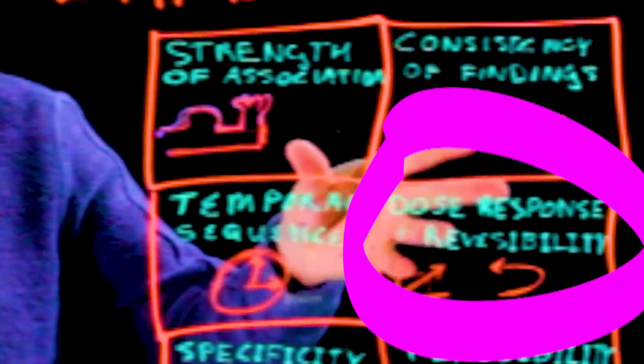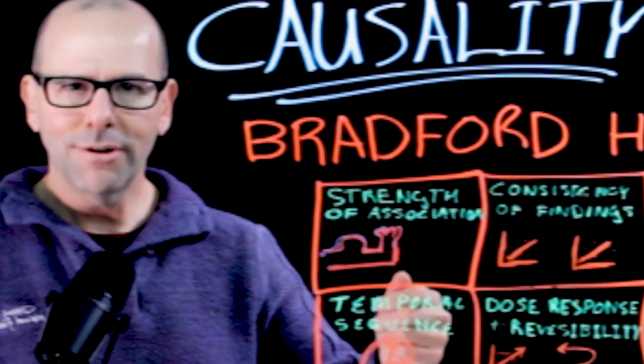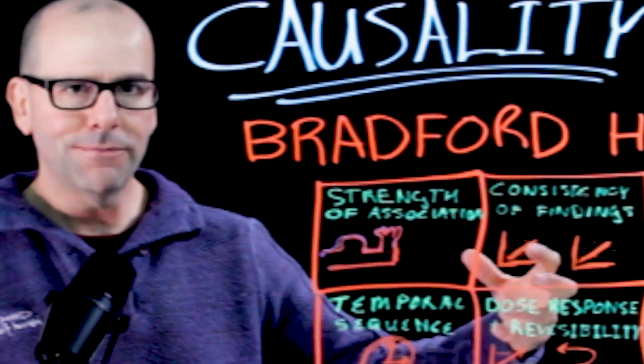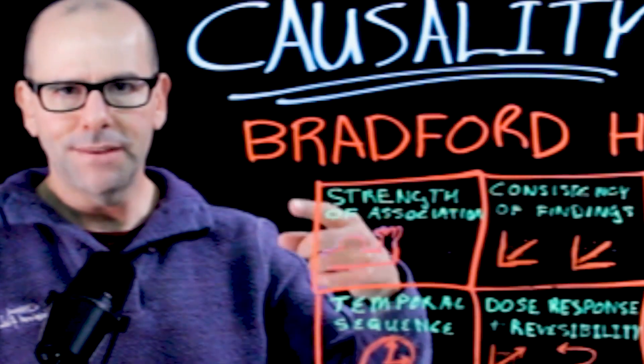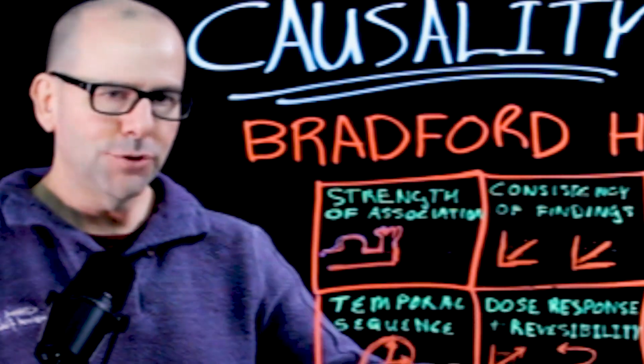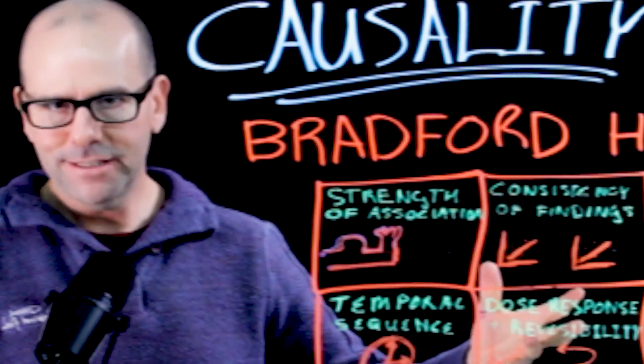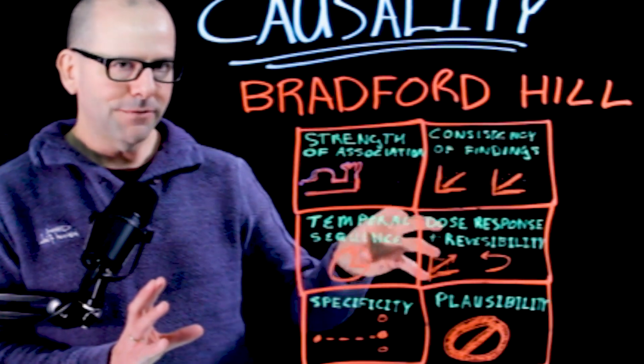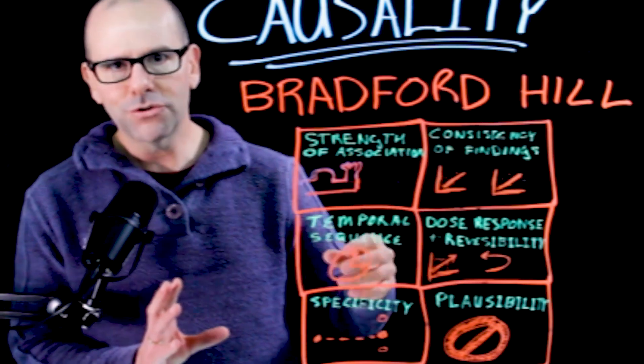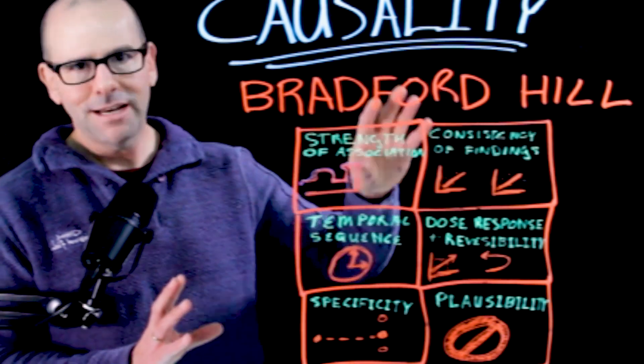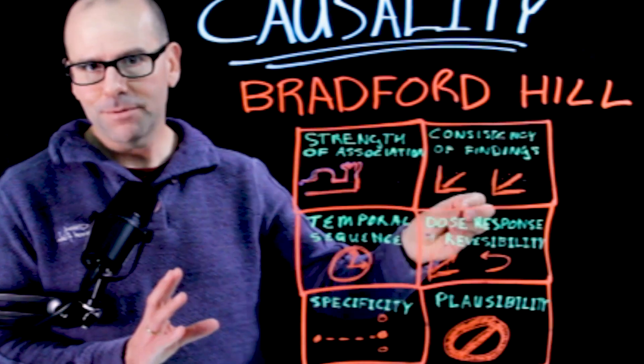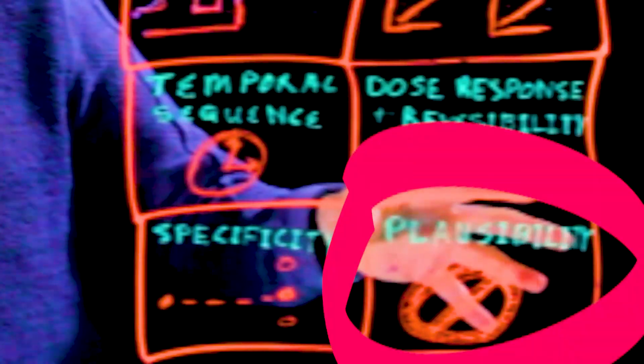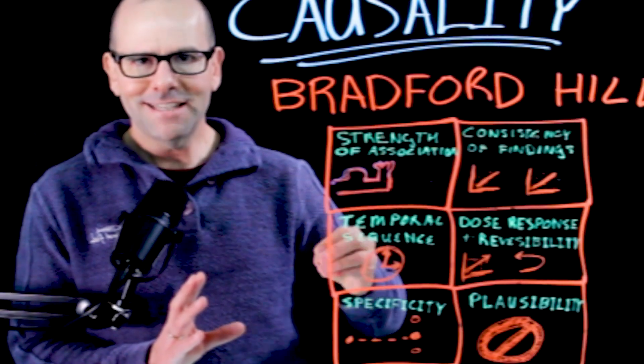Dose response and reversibility are really two sides of the same coin, right? Dose response is if you add more of the exposure, you'll see more of the outcome. And reversibility is if you take away the exposure, the effect is reversed. Specificity is really this exposure is related specifically with this outcome by contrast to it's related to just about everything and one of that, everything just happens to be the outcome of interest. And plausibility, this relationship is in fact possible.